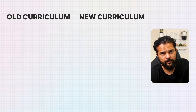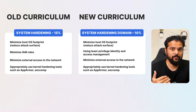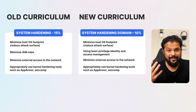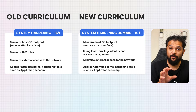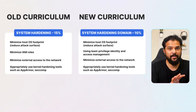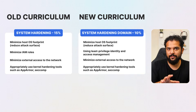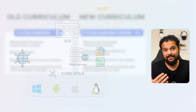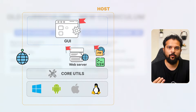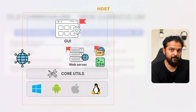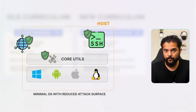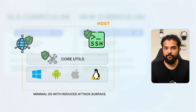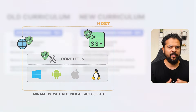Moving on to the system hardening domain, this focuses on reducing the attack surface of the Kubernetes environment by implementing various security measures at the system level. This domain has seen a reduction in its weight from 15 to 10 percent in the updated curriculum. The core principles remain the same. The first highlights the importance of minimizing the host operating system footprint to reduce the attack surface.